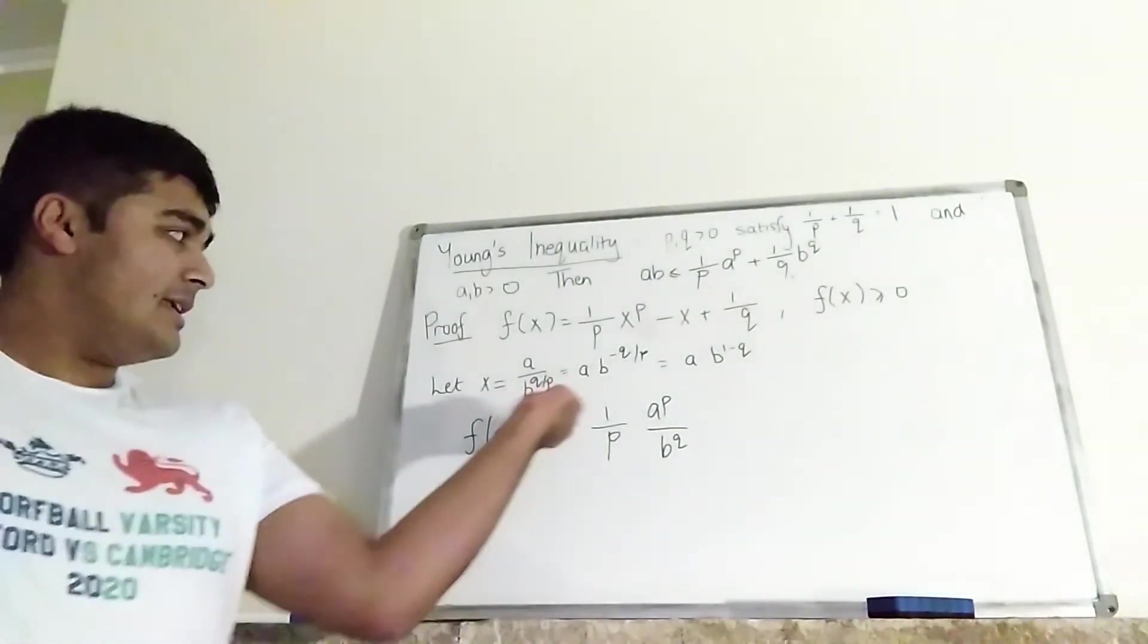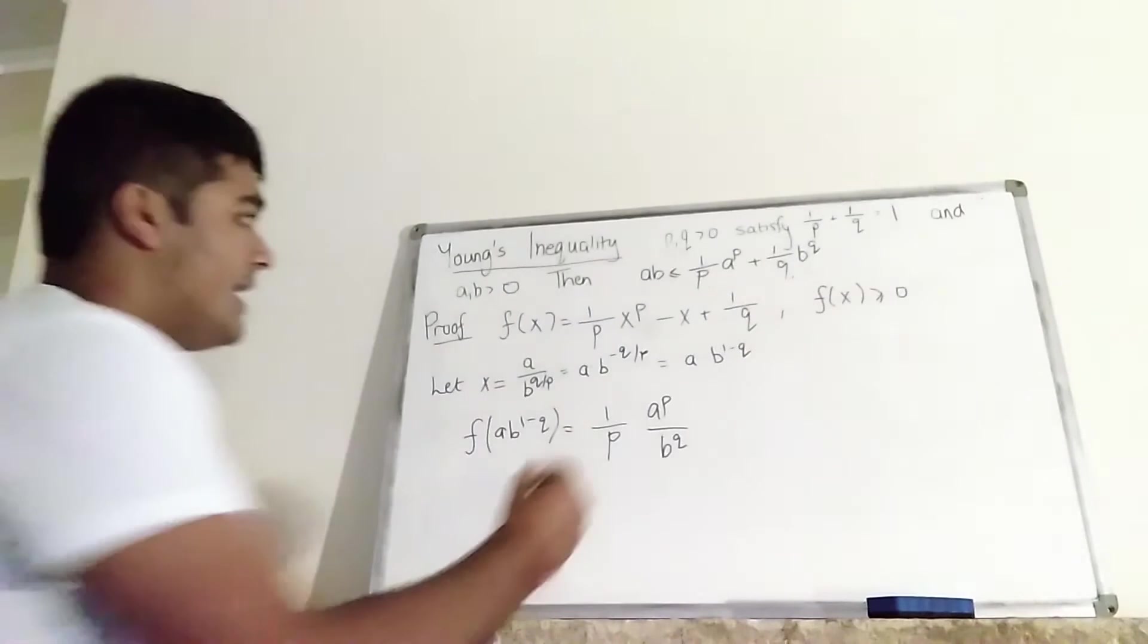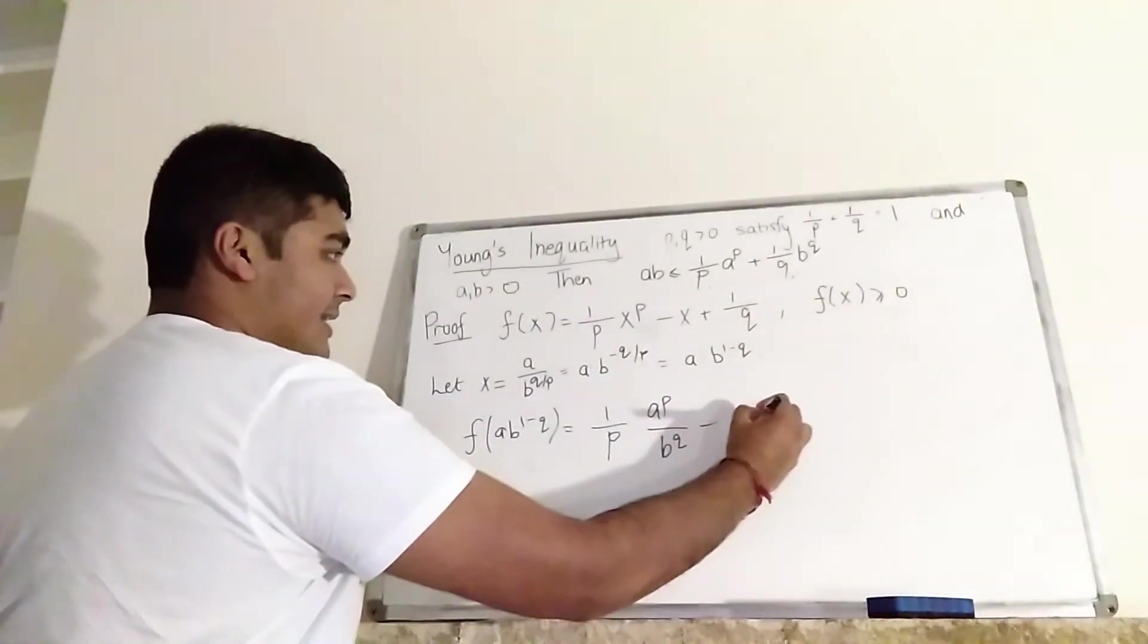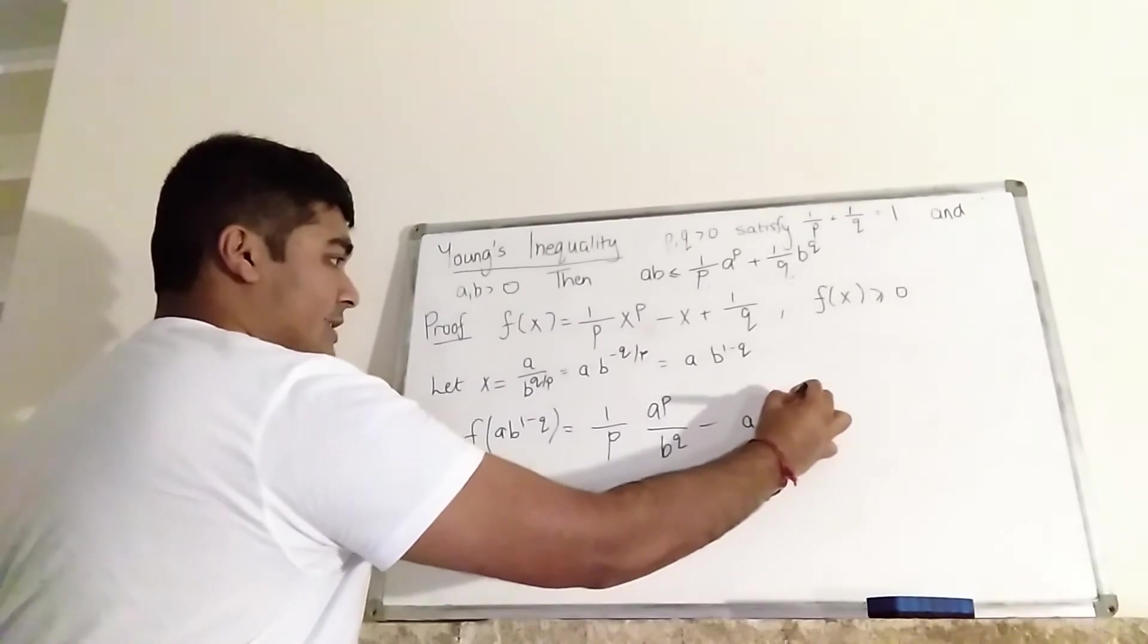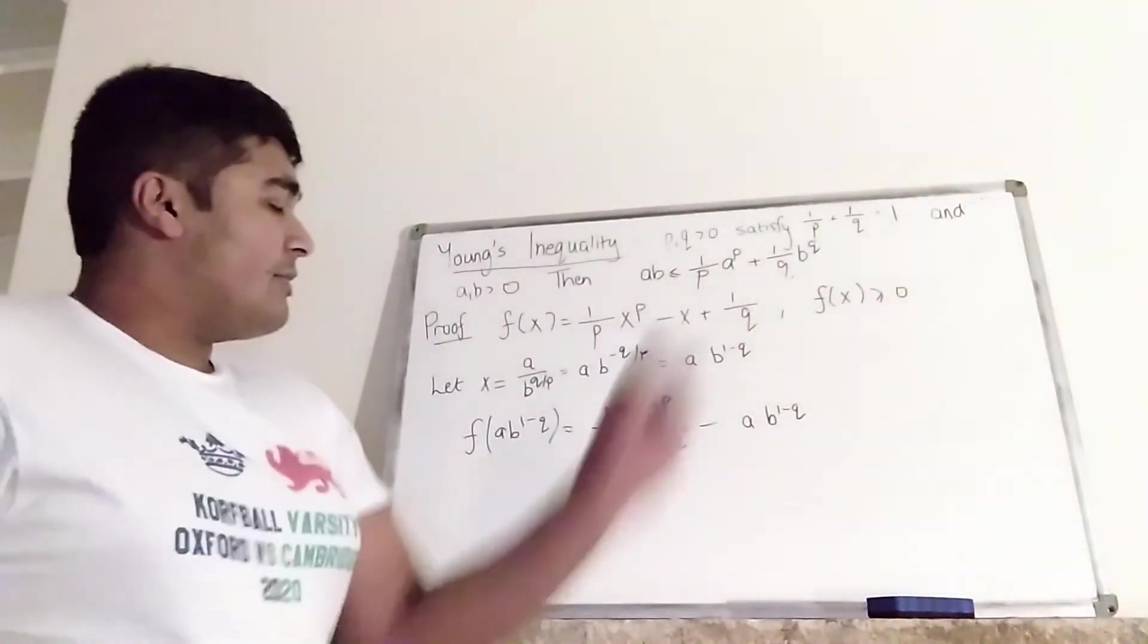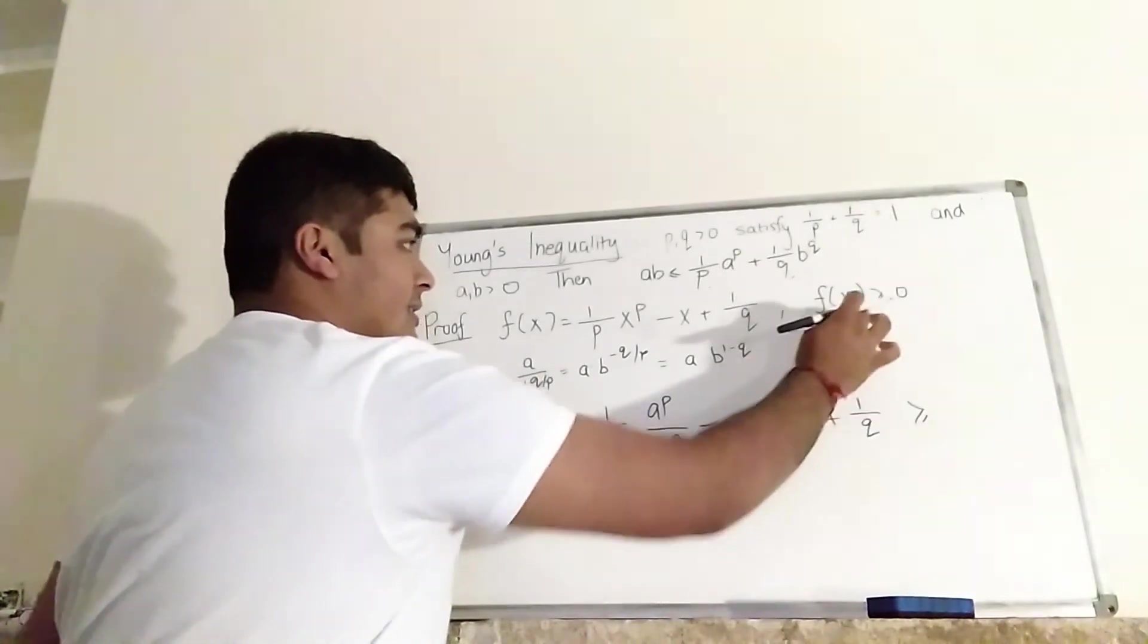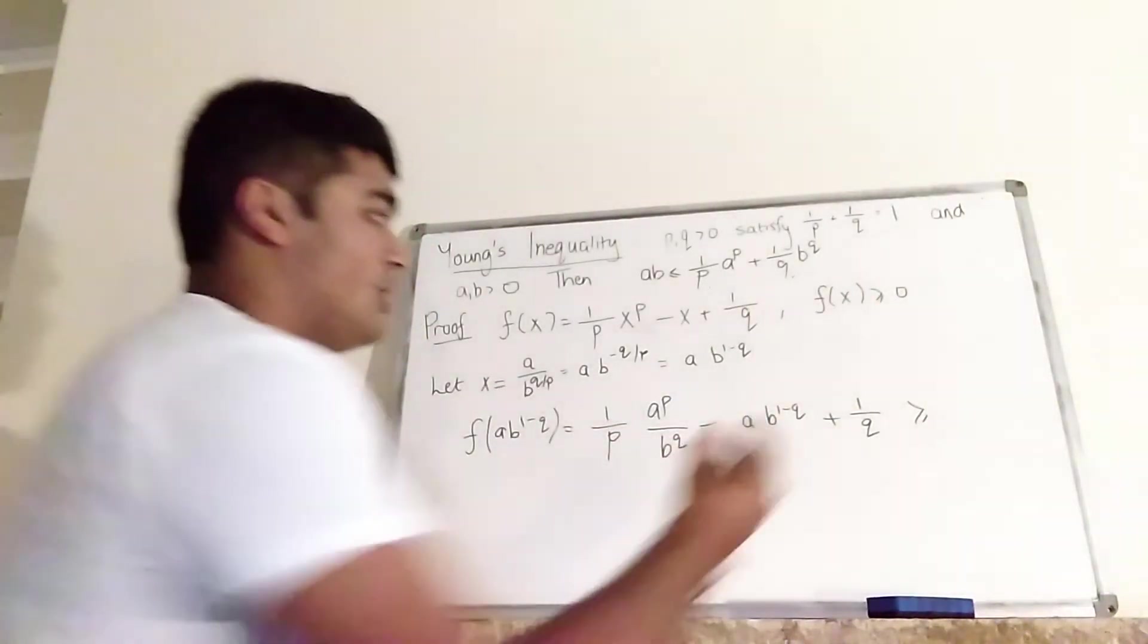OK, and then we've got minus X, and X is just this thing here, A times B to the 1 minus Q. And then we've got the plus 1 over Q there. And remember, we know that this thing here is strictly bigger than F of 1, which we showed was 0.